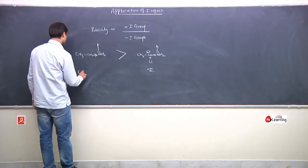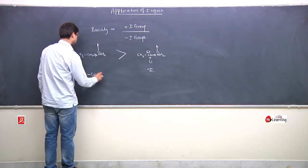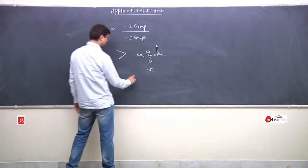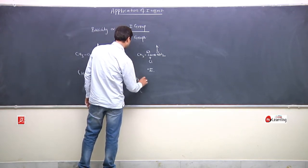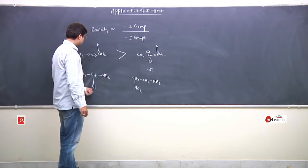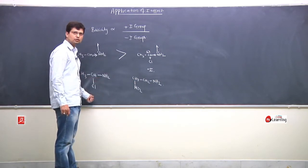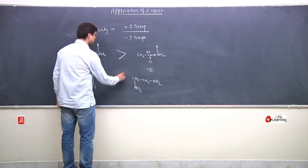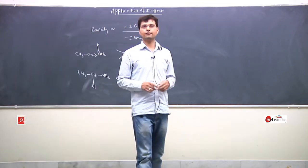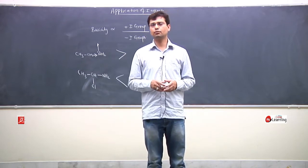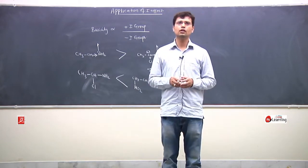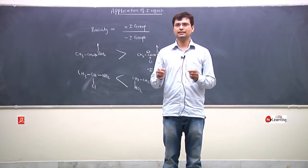Another example: a strong minus-I group at a larger distance versus a weak minus-I group at a shorter distance. The weak minus-I group at shorter distance reduces basicity more than the strong minus-I group at greater distance, because distance is the major factor. Therefore the compound with the strong minus-I group farther away is more basic.